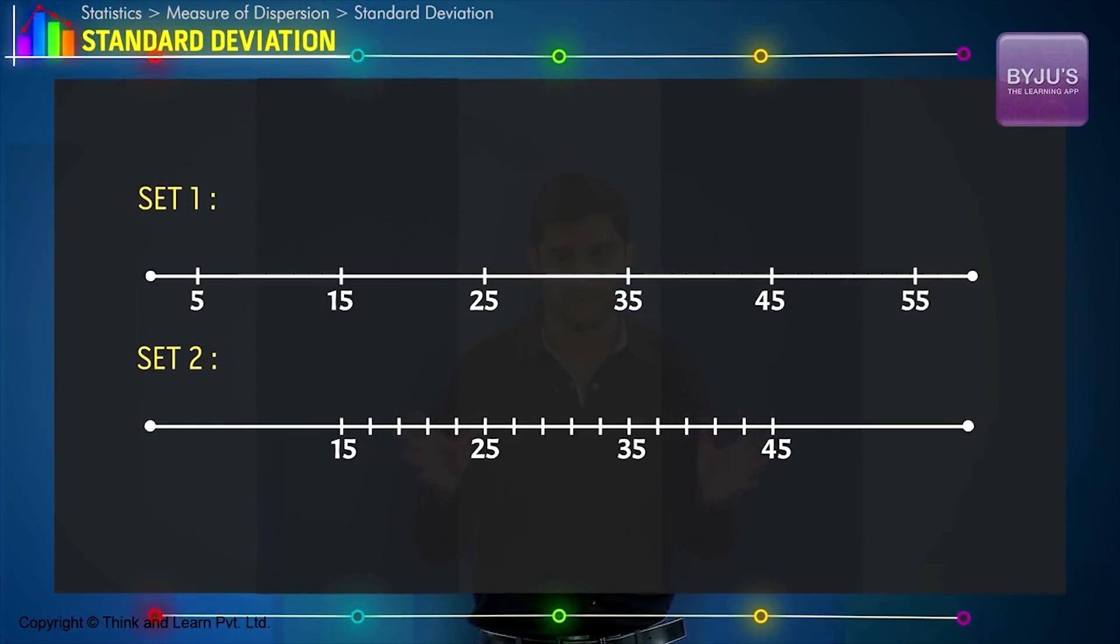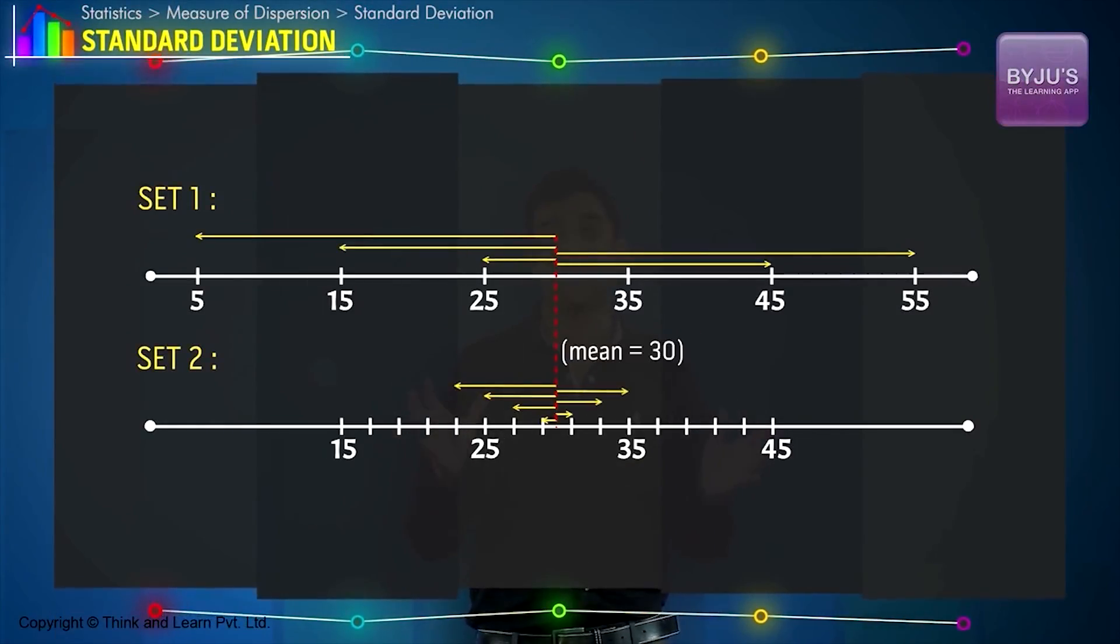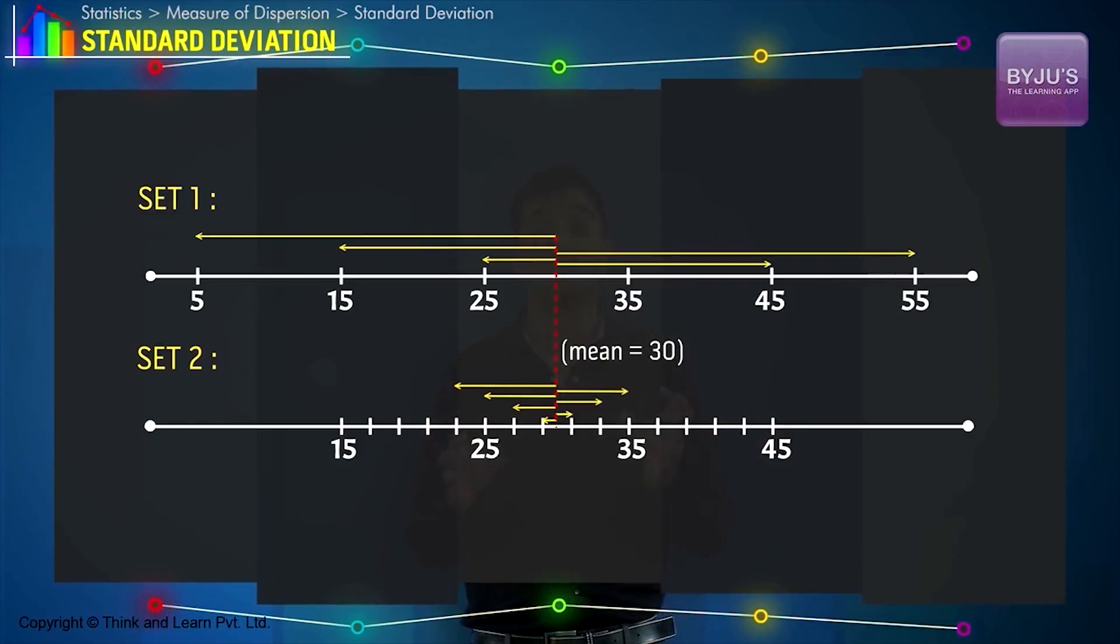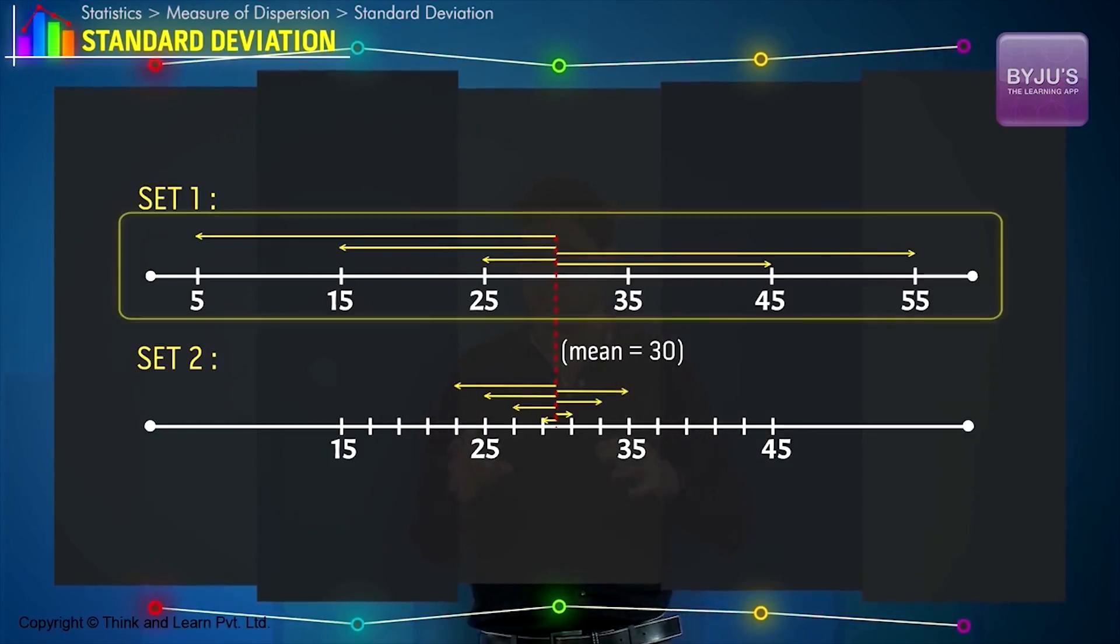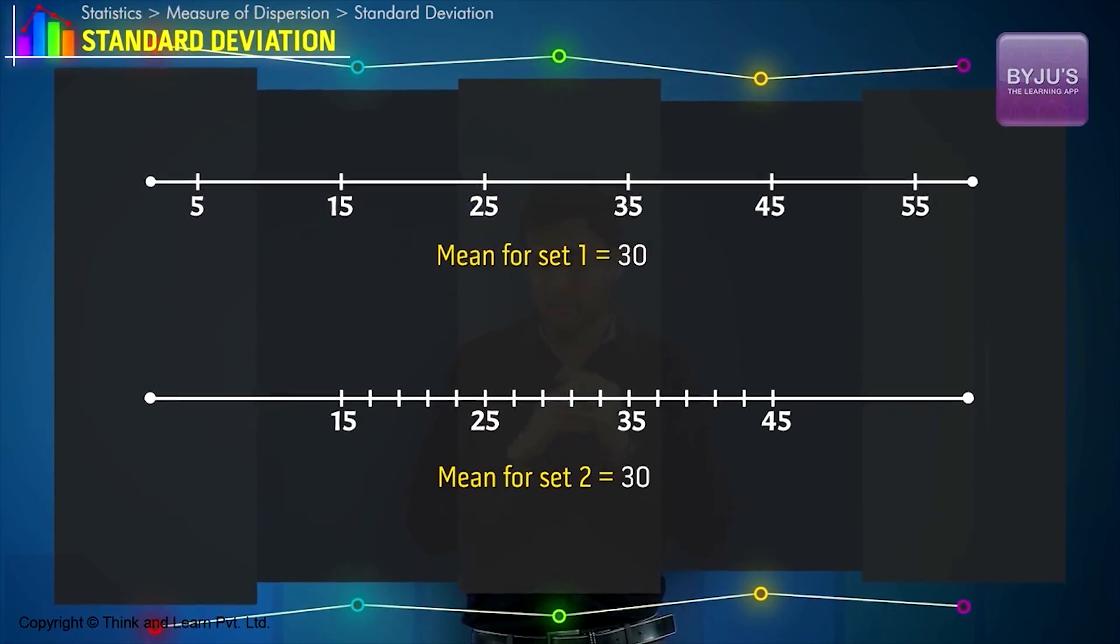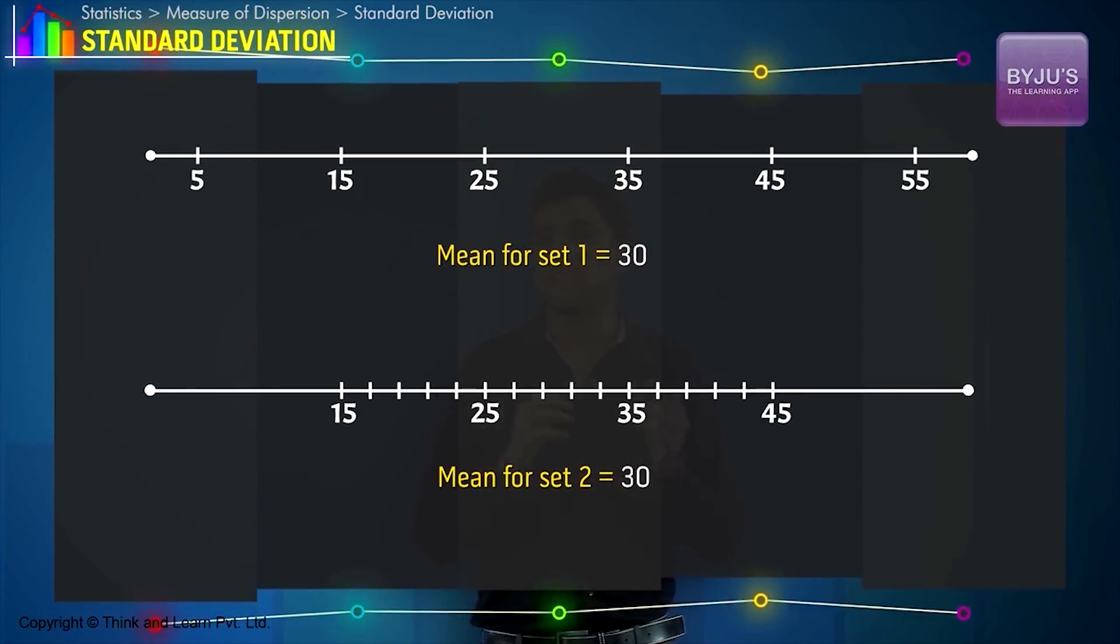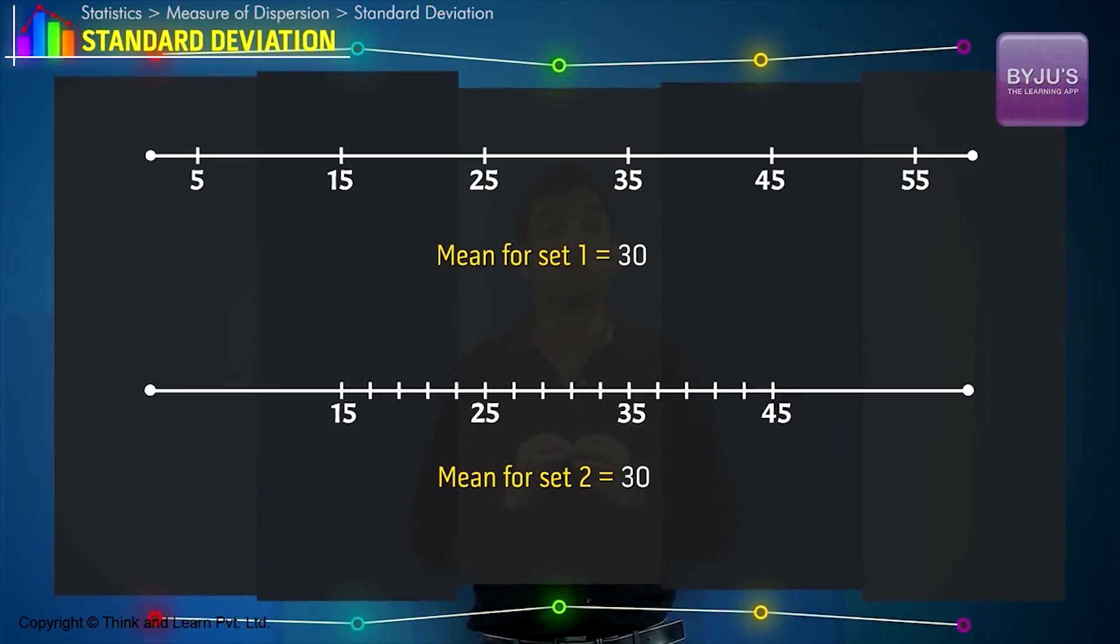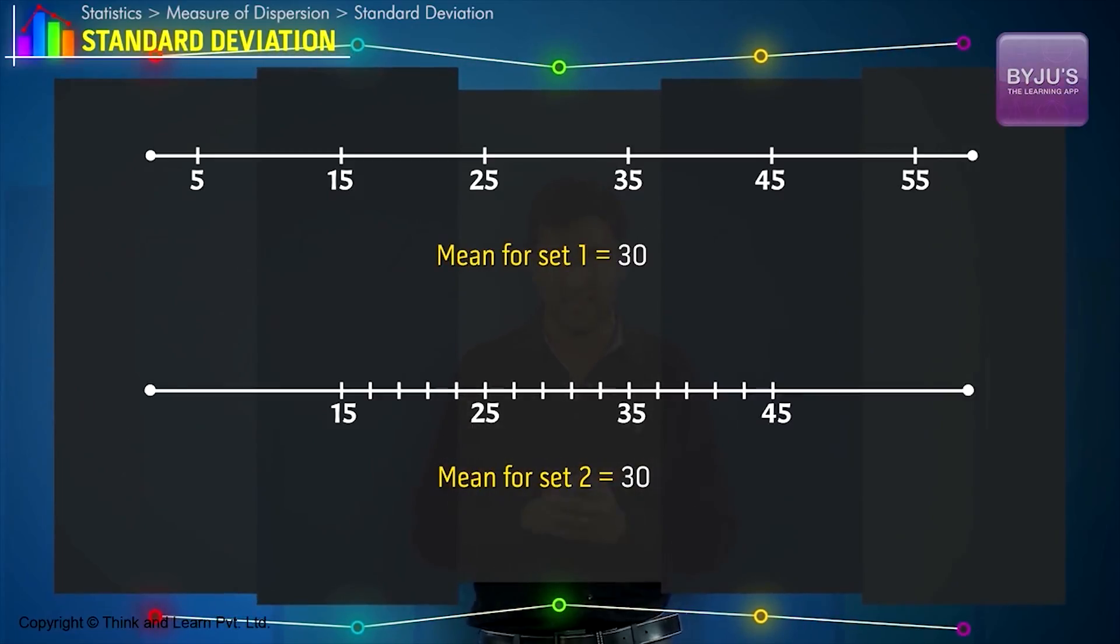Consider the two datasets. From the animation, we can see the deviation of points from central tendency is greater in the first example compared to the second. But the mean does not emphasize this fact, as it comes out to be almost the same value in both cases.